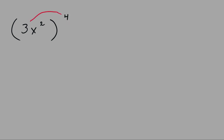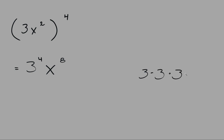For 3x squared in brackets raised to the power of 4, you distribute the 4 to the coefficient of 3 and to the power of 2. So it becomes 3 to the power of 4, variable x, and when you have a power raised to a power you multiply them: 2 times 4 is 8. 3 to the power of 4 is 3 times 3 equals 9, times 3 equals 27, times 3 equals 81. So the answer is 81x to the power of 8.